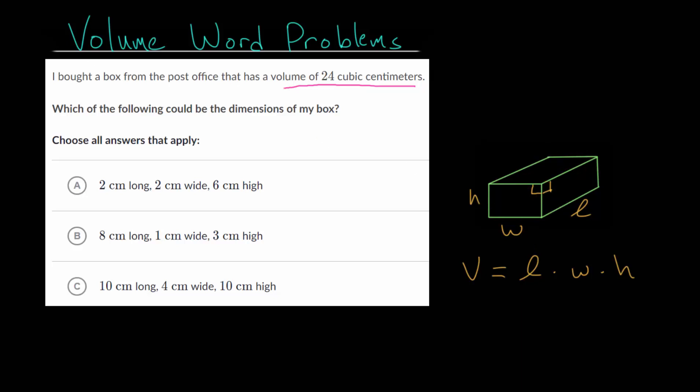The way to approach this problem is to apply the formula. We are told that the volume of our box is 24 cubic centimeters, and the way to get this volume is to multiply the three dimensions. So let's apply that for each of these scenarios. We have the length, let me label these. So this is the length, this is the width w, and this is the height h.